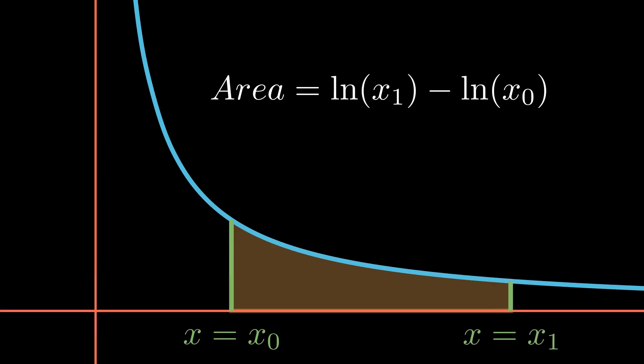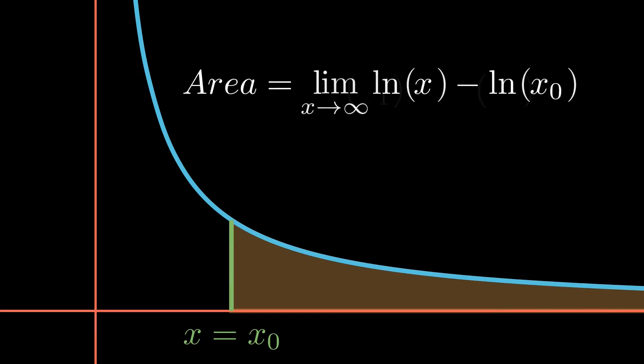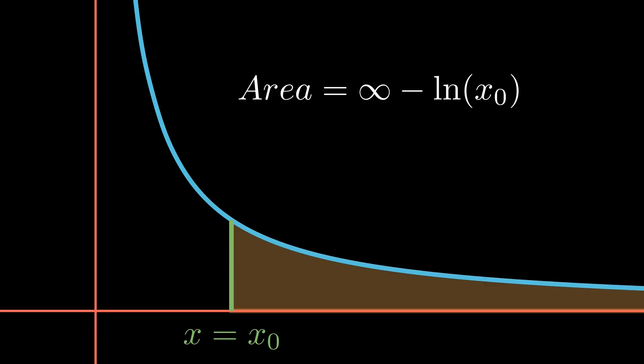We can take x1 to the extreme, making it as large as we want. As such, this area can now be represented as the limit as x1 goes to infinity. Since natural log is unbounded, the limit will equal infinity. Notice that subtracting natural log of x0 is subtracting a finite value from an infinite one, meaning that the limit will still be infinite.